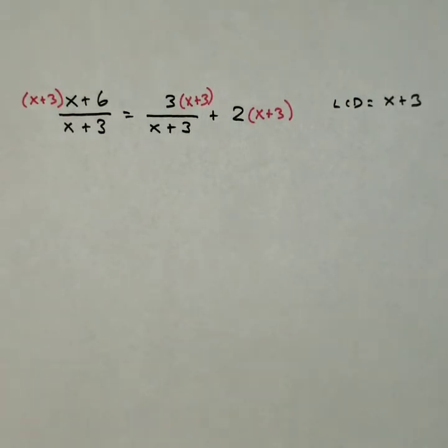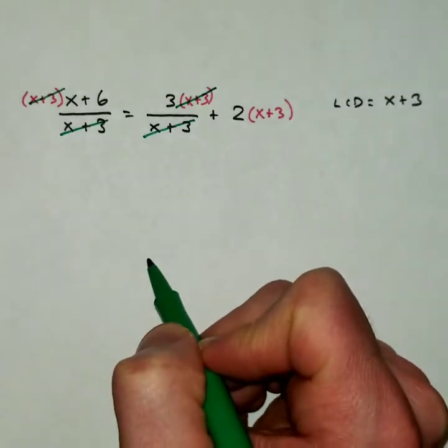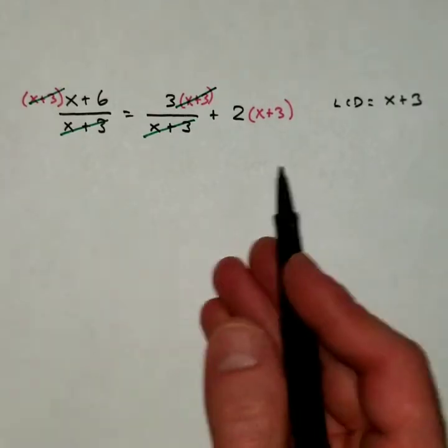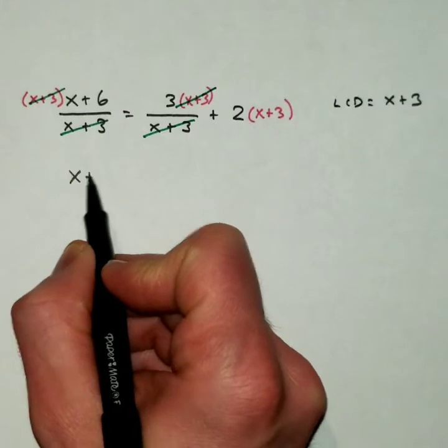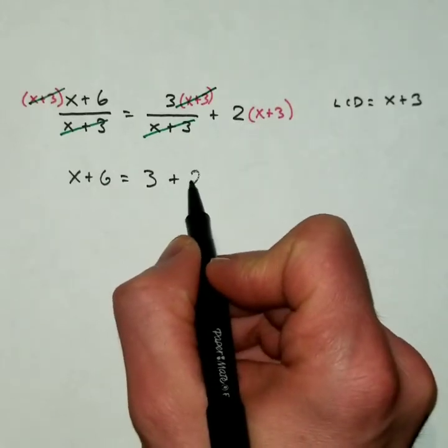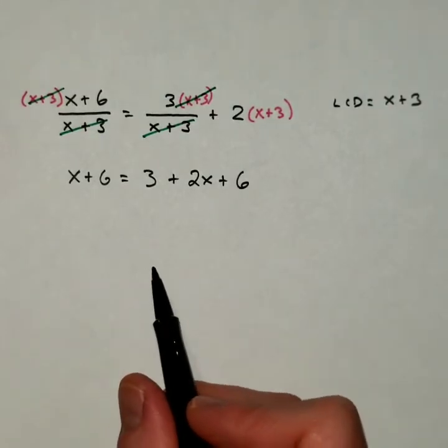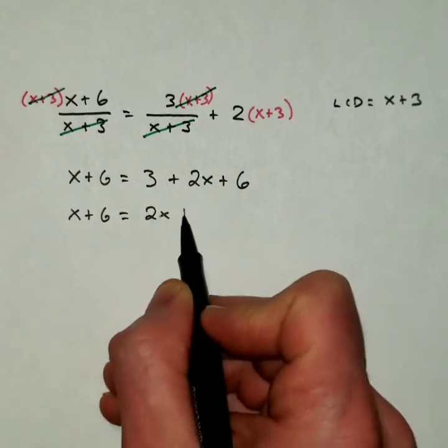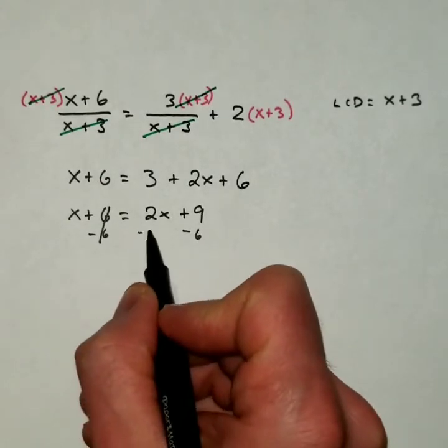Then we're going to cancel common factors. So there's an x plus 3 and an x plus 3. Those get canceled. Here's an x plus 3 and an x plus 3. Those get canceled. The third term does not have a common factor. And so now we just simplify whatever is left over. So the fourth step is to simplify. It's going to be an x plus 6, just a 3 there. Here I'm going to distribute the 2. I'm going to get 2x plus 6. Then we're going to combine our terms here. Simplify a little bit more. It would be 2x, 3 and 6 makes 9. And then solve. Subtract your 6 and subtract the 2x.